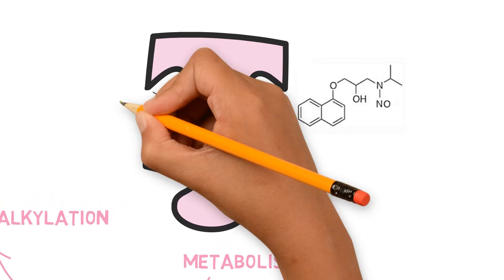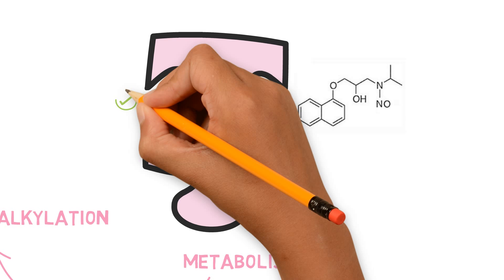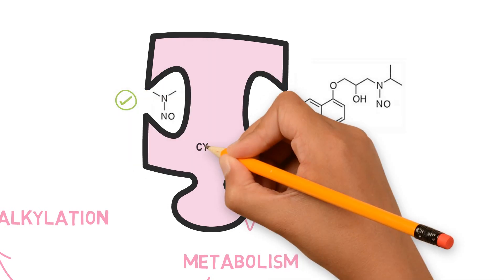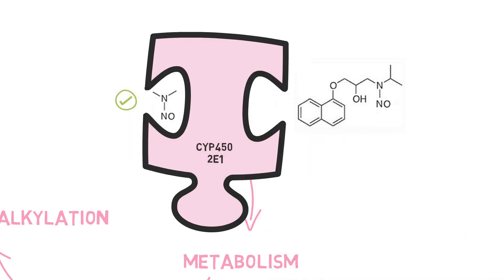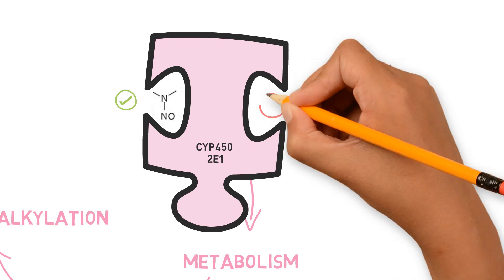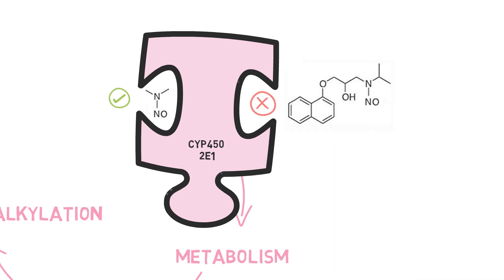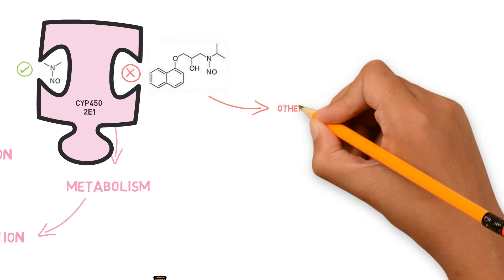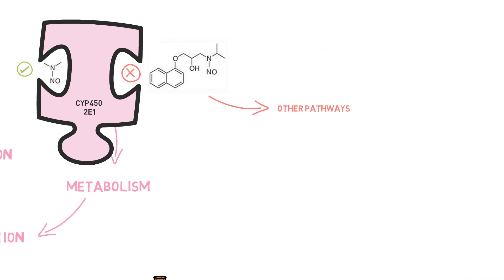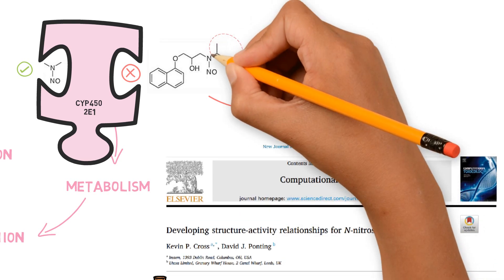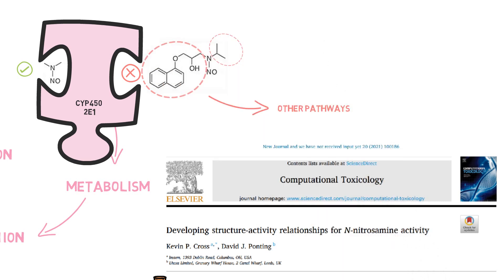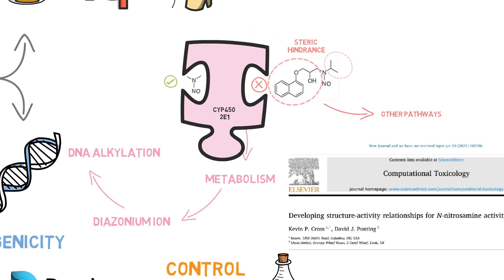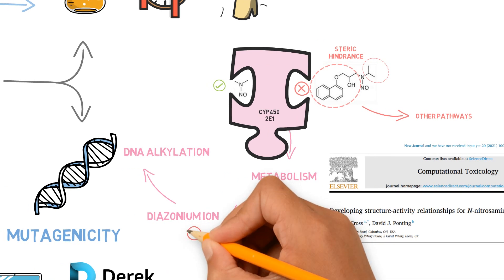Small nitrosamines are generally metabolized by CYP450 2E1, but larger nitrosamines which do not fit this enzyme may undergo a different pathway, such as metabolism by other enzymes, which would lead to a different biological response. A recent paper has shown that due to different reasons, including steric hindrance, complex nitrosamines can be less potent than small nitrosamines or even not mutagenic when they are unable to alkylate the DNA.